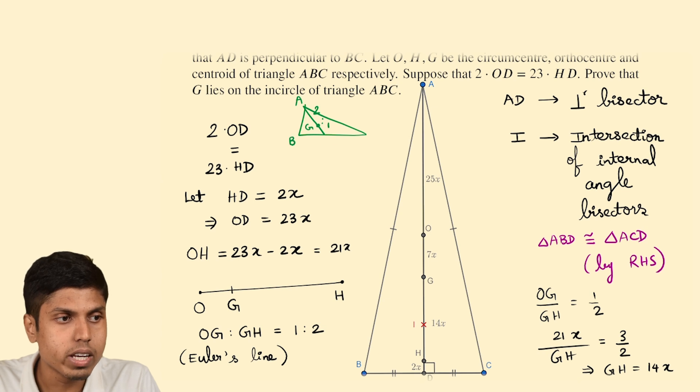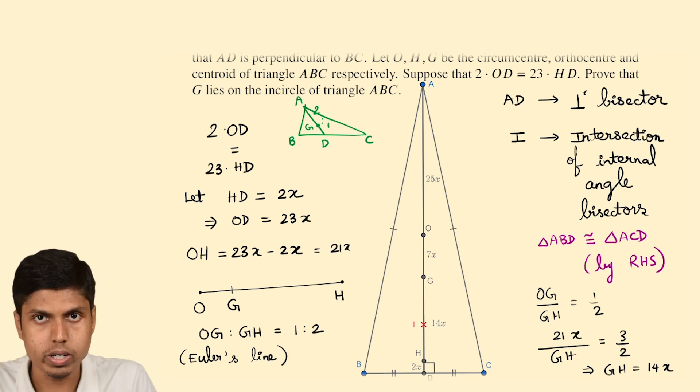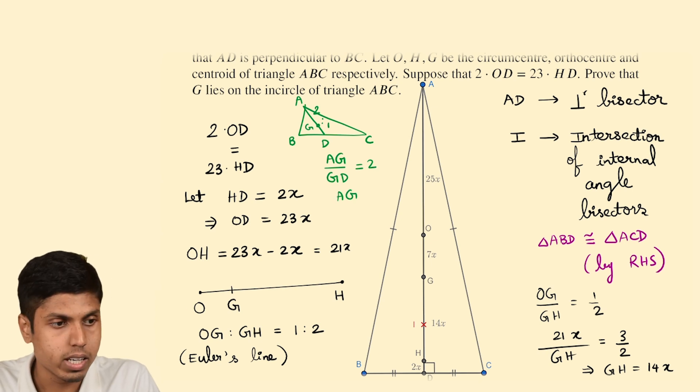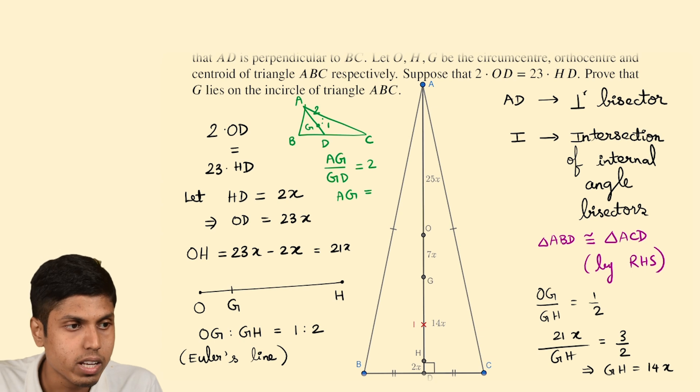And we are using which, we say that AG upon GD is 2. So AG is twice of GD. And we already know GD. By the Euler's line, we figured out GH. So GH plus HD, which is 16X, will be GD. So 16 times 2 will be 32X.